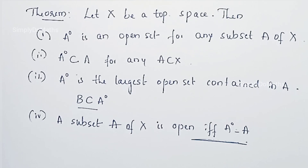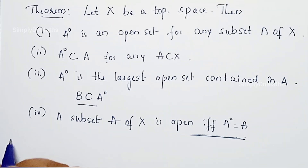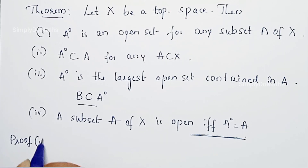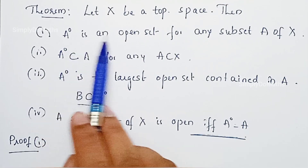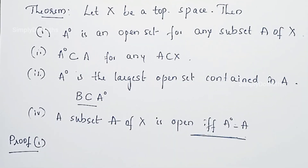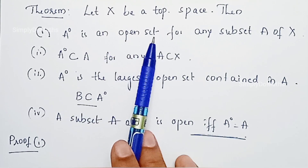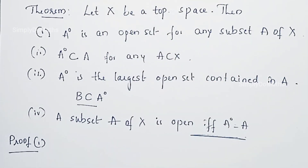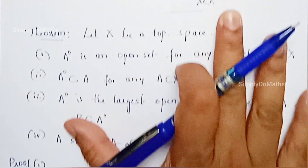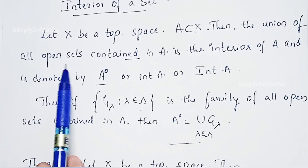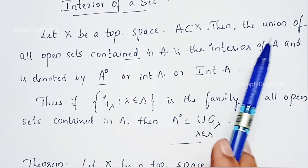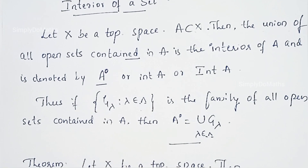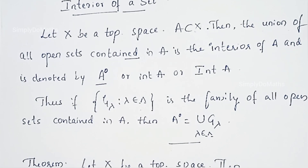We'll learn all these properties one by one with proof. Let's prove the first one: Aº is an open set for any subset A of X. We can prove this by the definition of interior itself. The definition says the union of all open sets contained in A is the interior of A. Since we are taking the union of open sets, and the union of open sets is again an open set, the interior will be an open set.